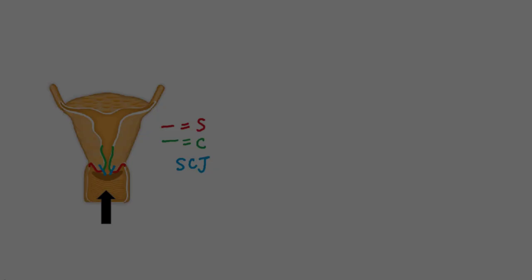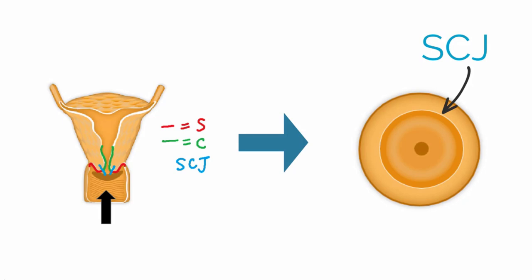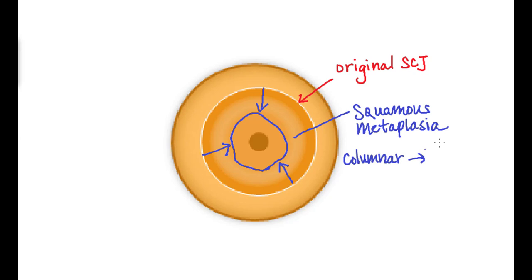Now let's look at the cervix in a different way. This is a schematic of the cervix as you would see it when doing a speculum exam. The original SCJ is highlighted. The location of the SCJ varies with age and hormonal status. During adolescence and pregnancy, the SCJ averts outward to the ectocervix. In low estrogen states such as menopause, the SCJ regresses back into the endocervical canal. Squamous metaplasia is the normal replacement of columnar by squamous epithelium on the cervix. This process creates a widening band of tissue between the original columnar epithelium and the squamous epithelium, known as the transformation zone.